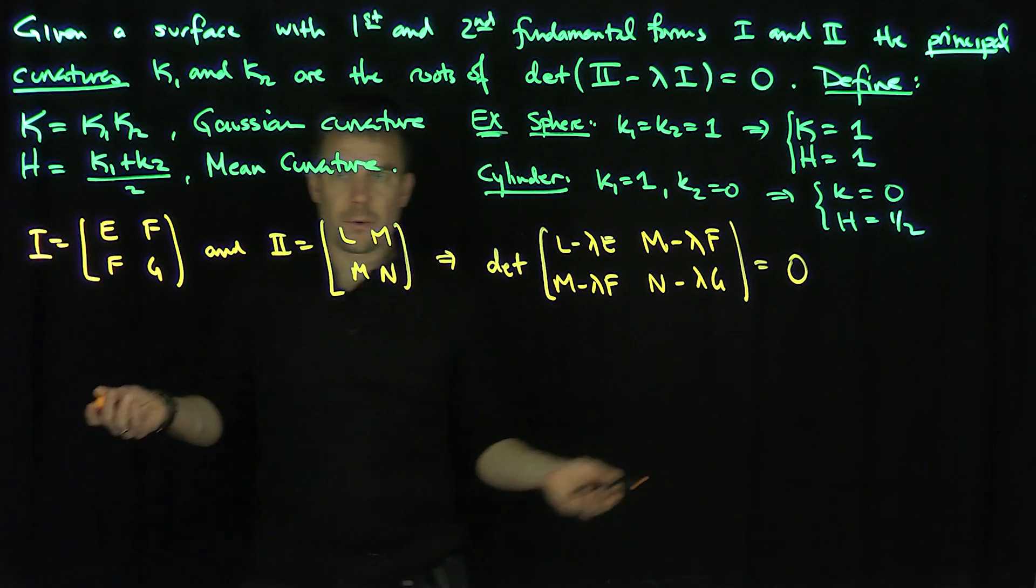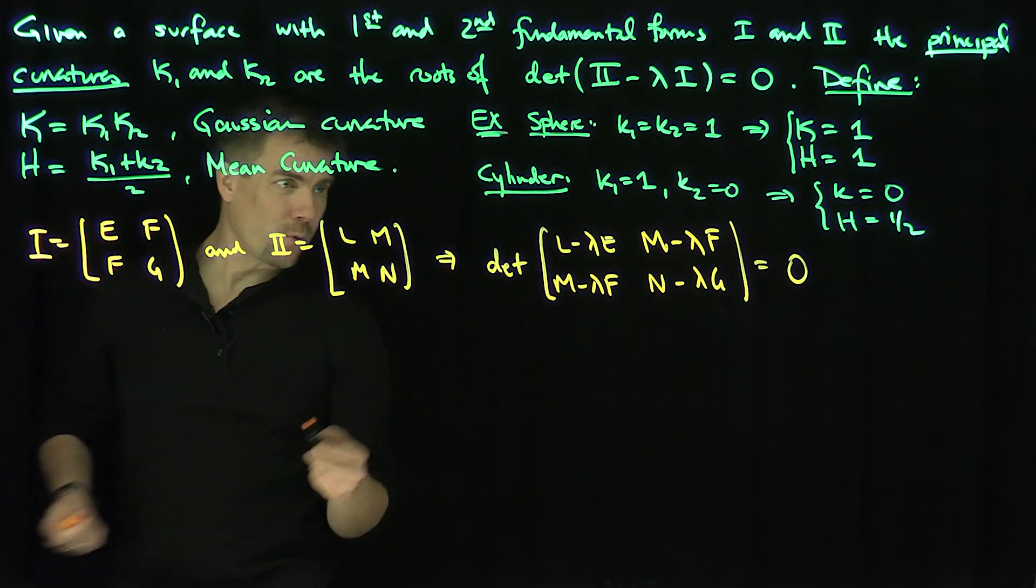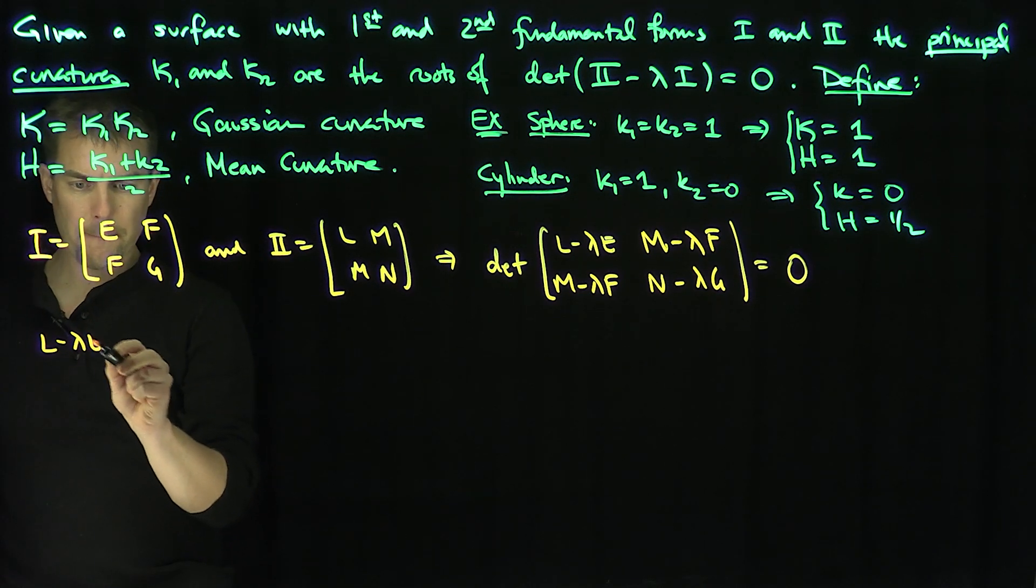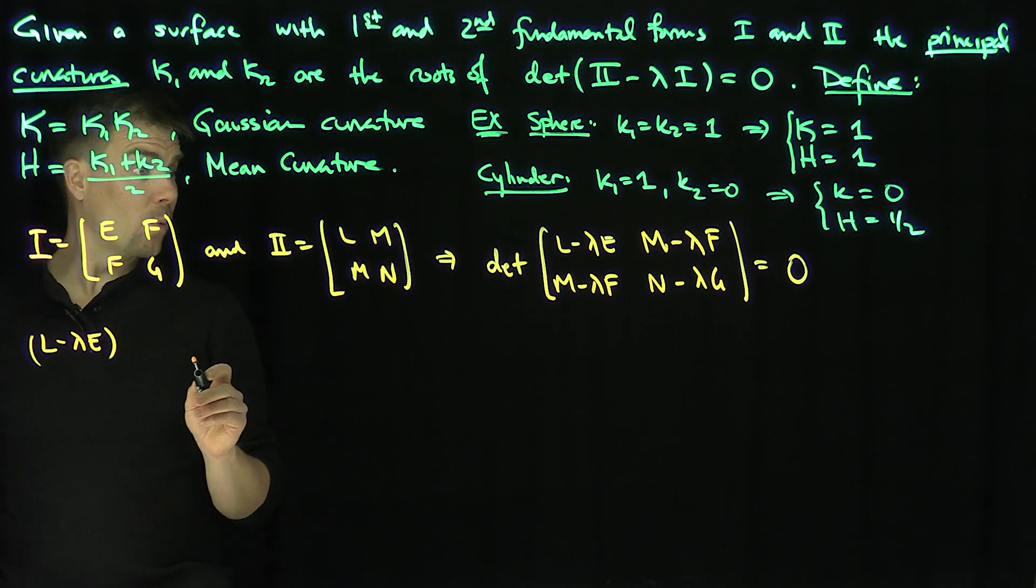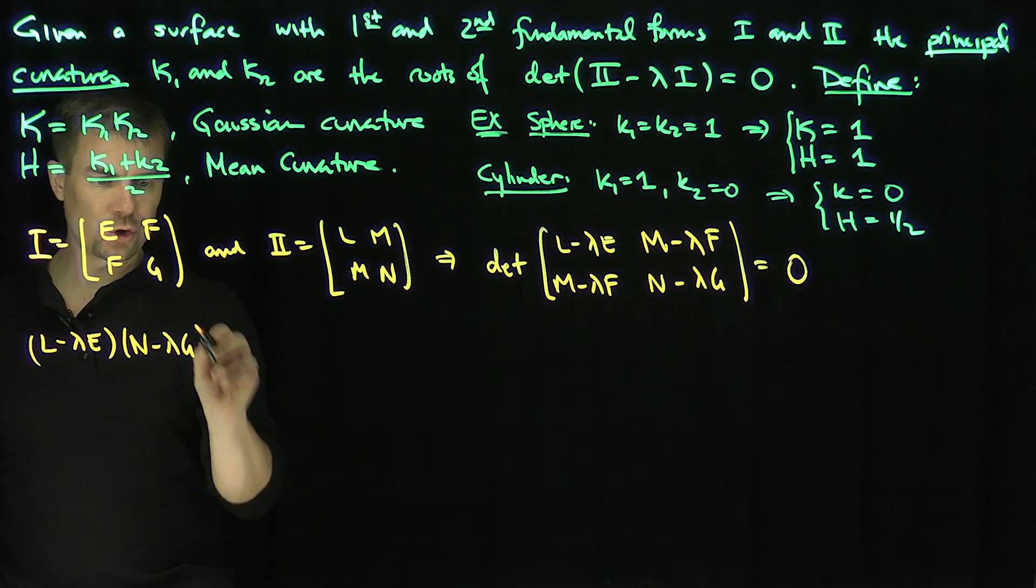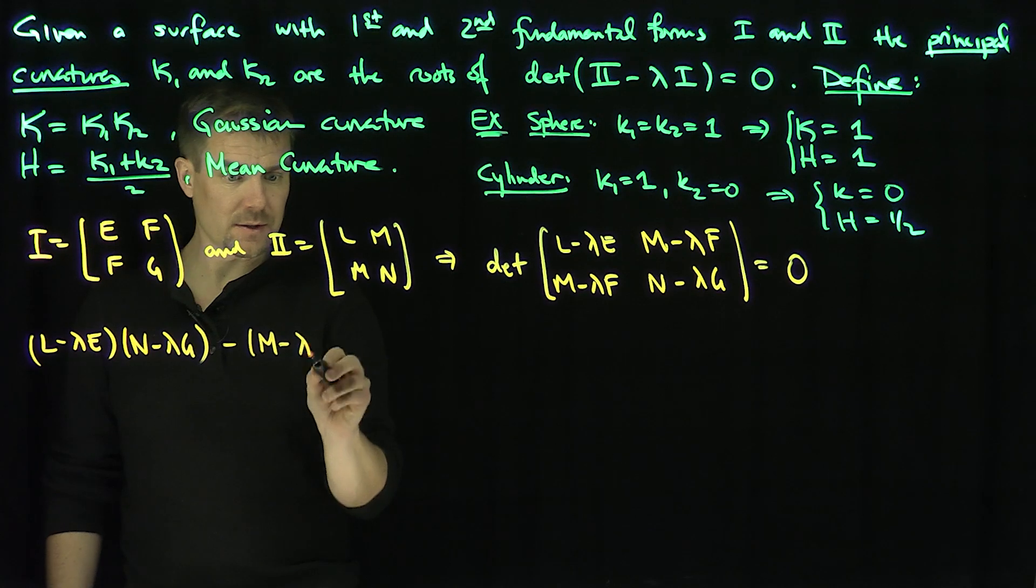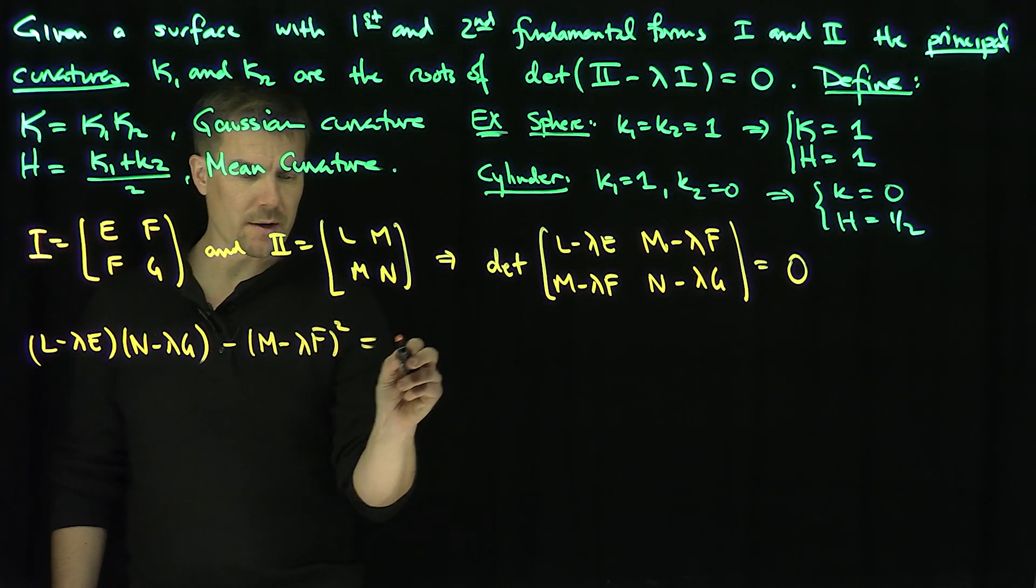Equals 0. If I can solve this equation, I can find what the principal curvatures are. So let's foil it out. So I'm going to have an L minus lambda E times N minus lambda G. And then minus M minus lambda F quantity squared is equal to 0.